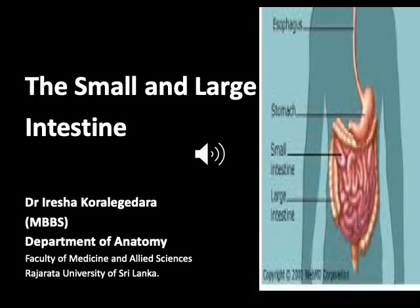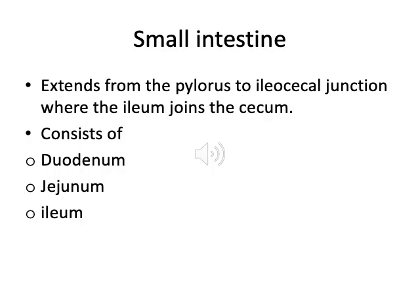Good morning to you all. Today's lecture is on the small and large intestine. First we'll discuss about the small intestine. The small intestine extends from the pylorus to the ileocecal junction, where the ileum joins the cecum. It consists of the duodenum, jejunum, and ileum.